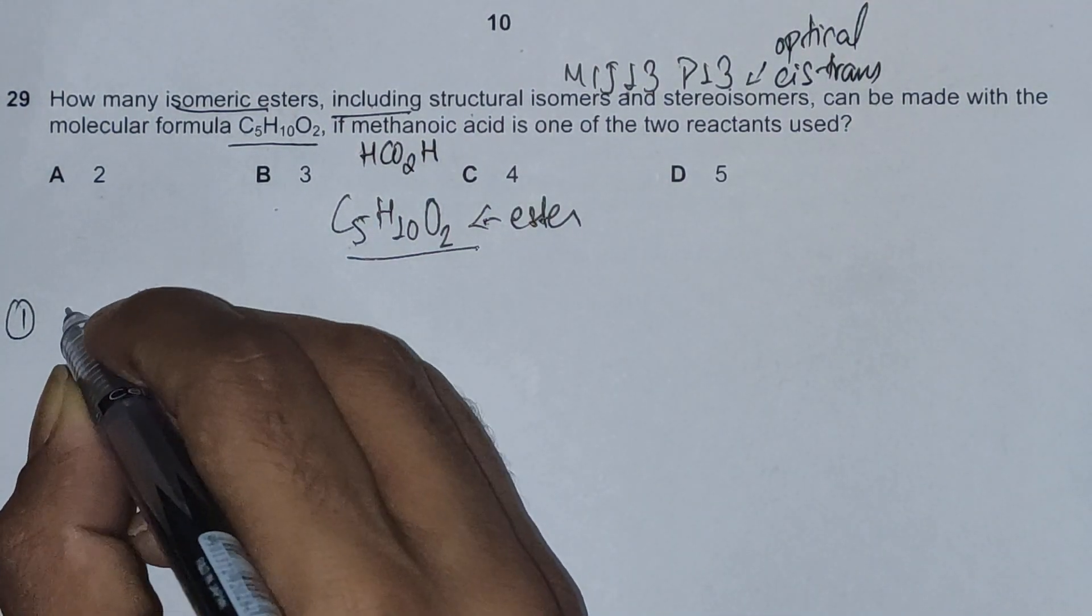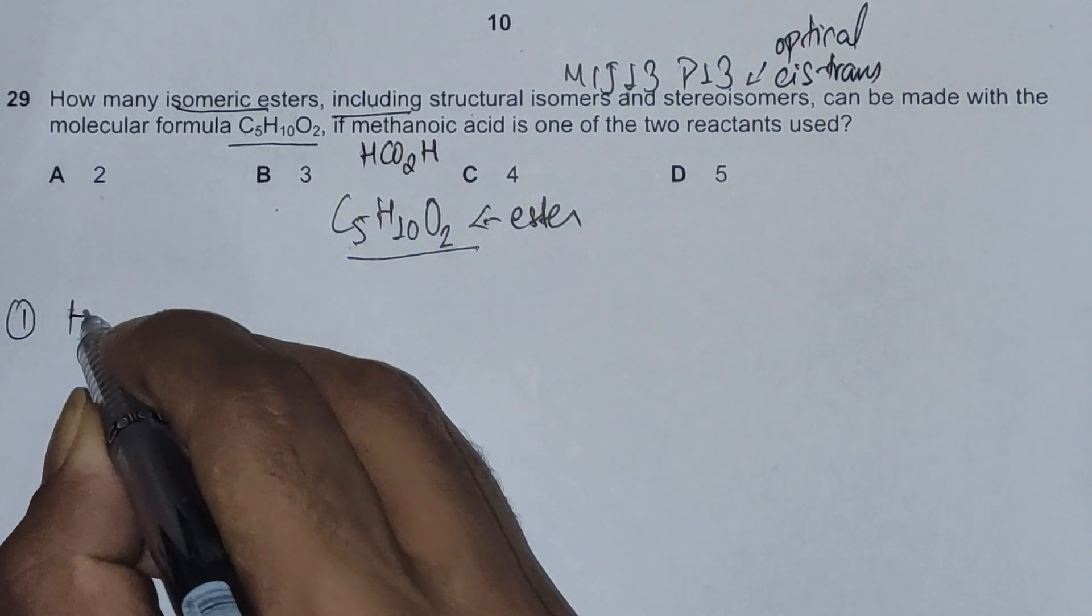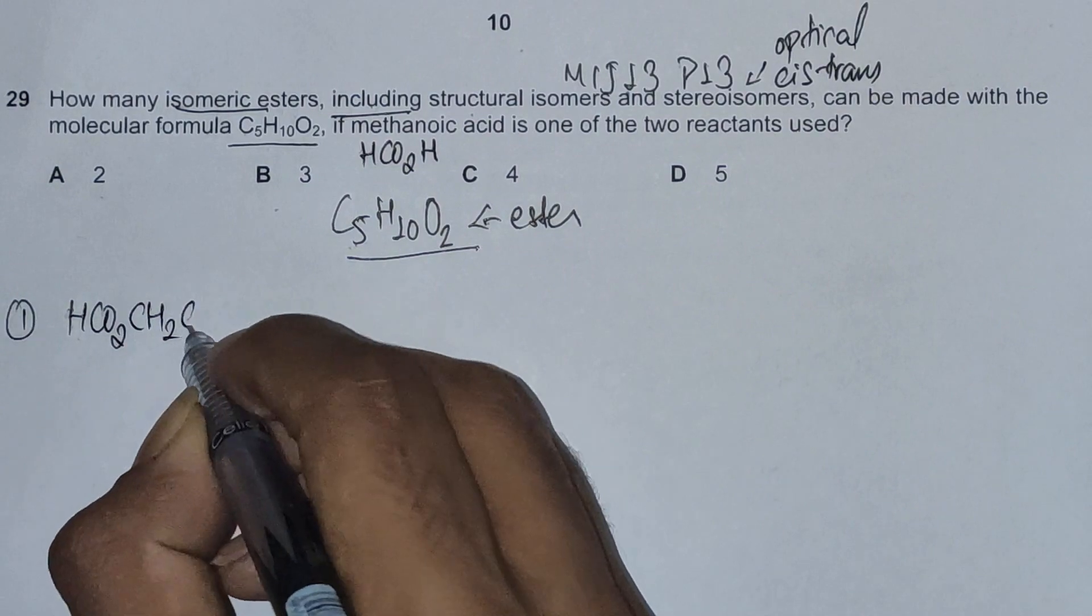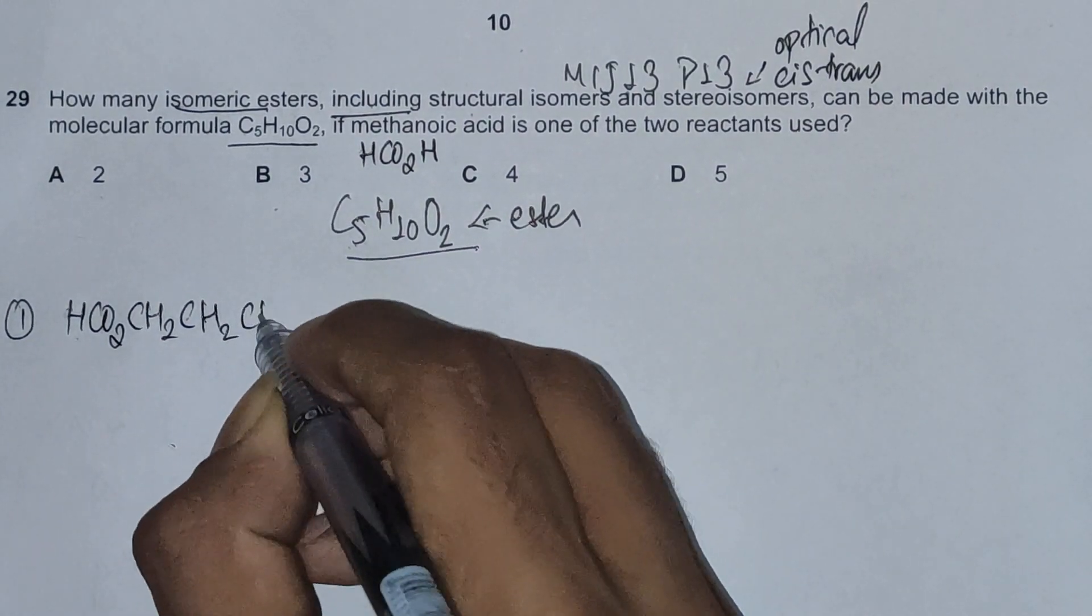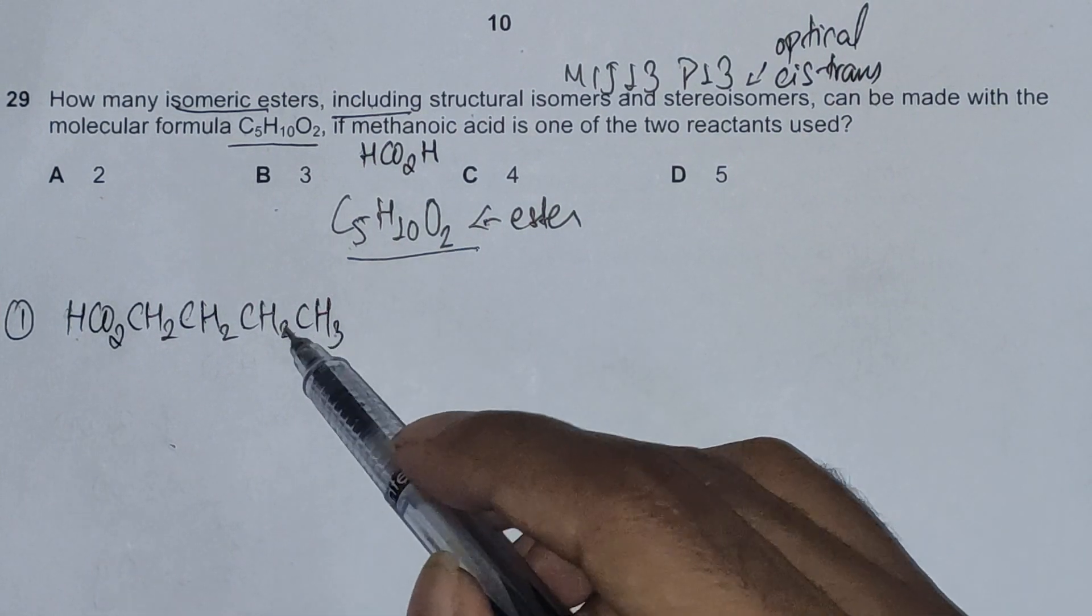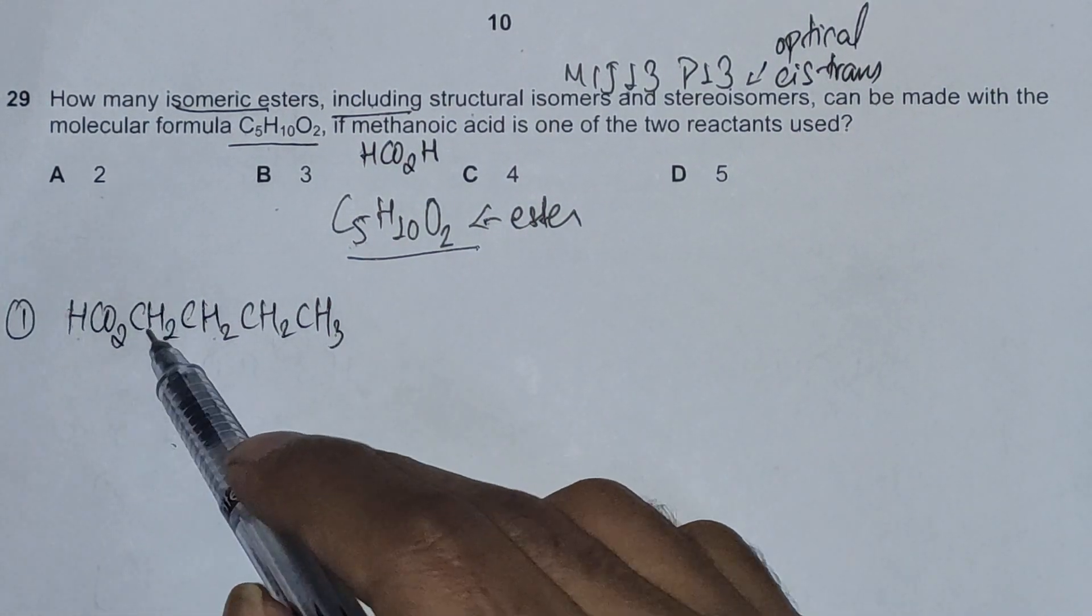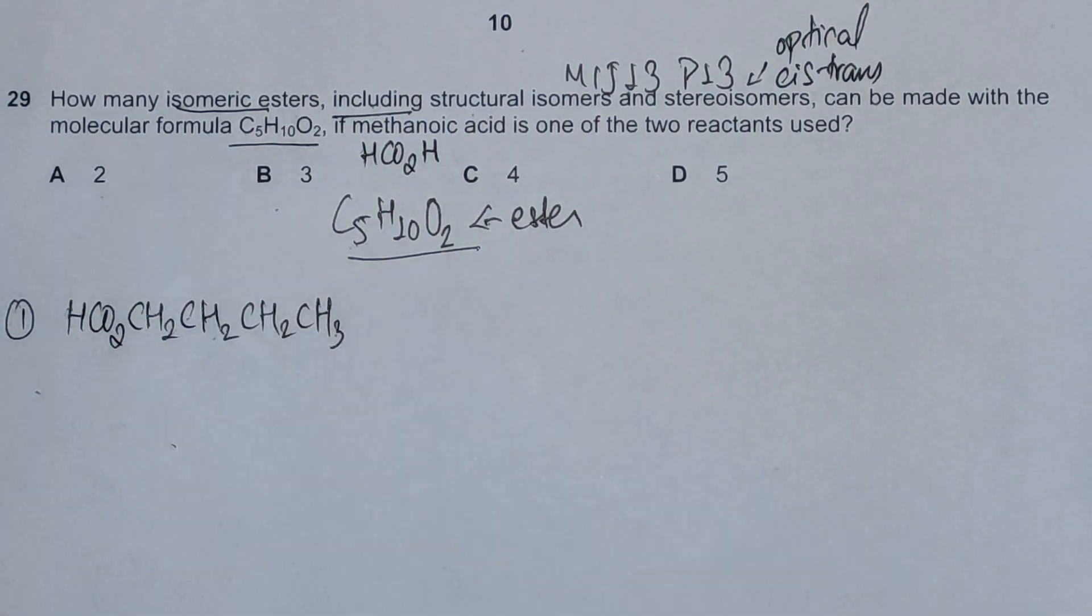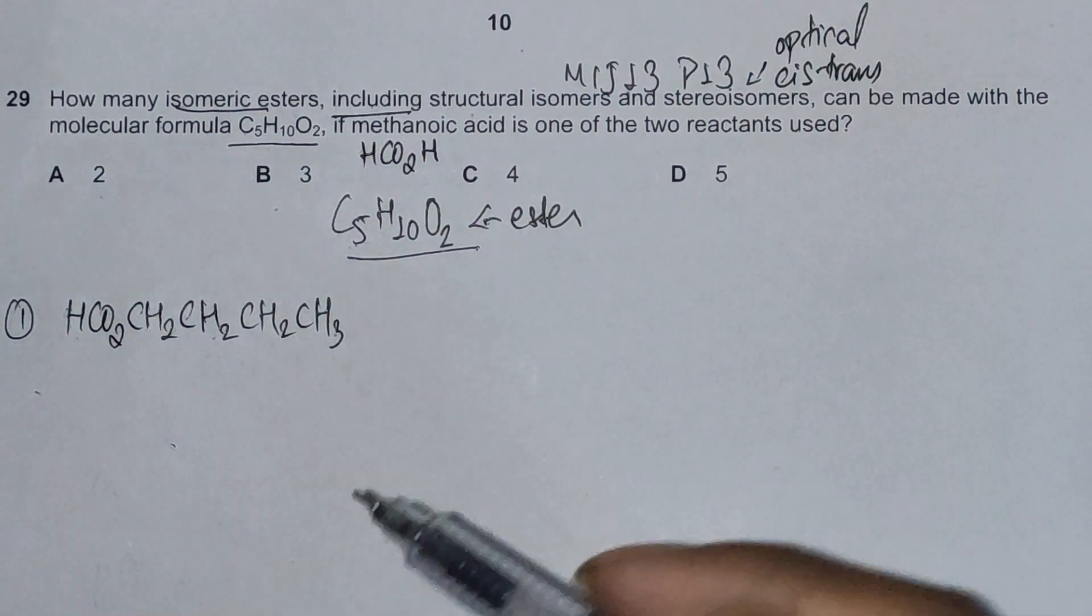The first one is going to be straight chain: HCO2-CH2-CH2-CH2-CH2-CH3. Counting hydrogens: 3, 4, 5, 6, 7, 8, 9, 10. Carbons: 1, 2, 3, 4, 5, and 2 oxygens. This is the first one and also the only straight chain ester.